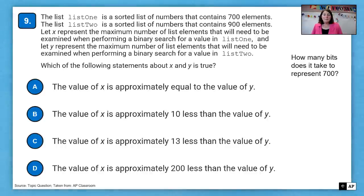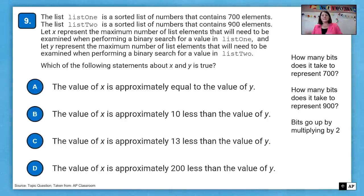So how many bits does it take to represent 700? That's the key. We're talking about binary search. And so bits help us to determine how many things we have to check. So how many bits does it take to represent 700? And how many bits does it take to represent 900? And remember, bits go up by multiplying by two. So earlier we had the one, the two, the eight, the four, the eight. So count by twos. One, two, four, eight, 16, 32, 64.